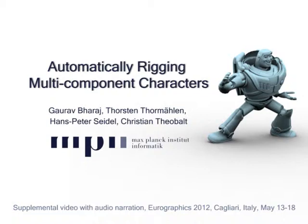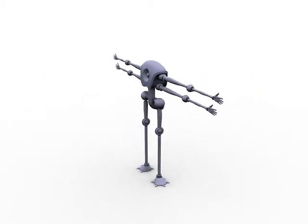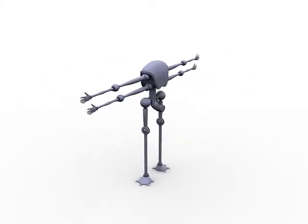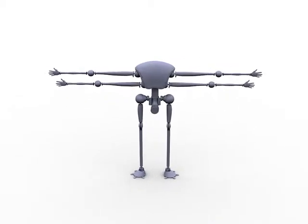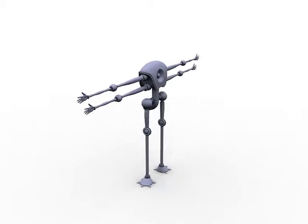In this paper, we present a system to automatically generate a suitable rigging for a multi-component character. Imagine that the user wants to animate the shown multi-component character. Such 3D models are available, for example, from large 3D model repositories on the internet.